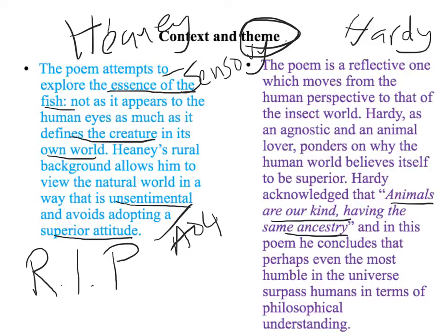Hardy's always at the centre of his poem - it's always his view of the animals, how the animals compare to him. It's not really about the natural world itself; it's about Hardy or the speaker's relationship with the natural world. Whereas Heaney is talking about the natural world detached from human eyes, detached from the human world. Hardy's always at the centre. Think of Steve Backshall and Deadly Sixty - Heaney gives you that sense of trying to take the human out of the equation and see the fish for the dynamic force that it is in its own world.